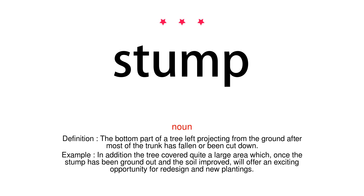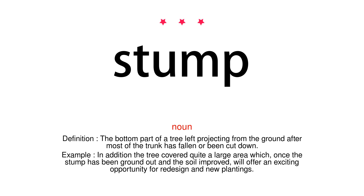Noun. Definition: The bottom part of a tree left projecting from the ground after most of the trunk has fallen or been cut down. Example: In addition the tree covered quite a large area which, once the stump has been ground out and the soil improved, will offer an exciting opportunity for redesign and new plantings.